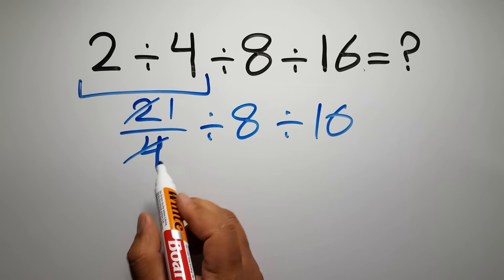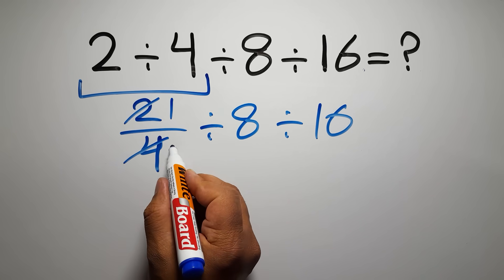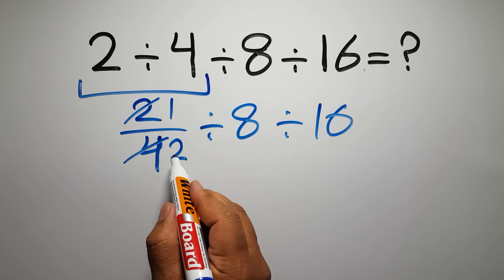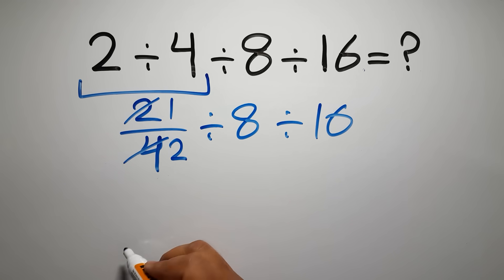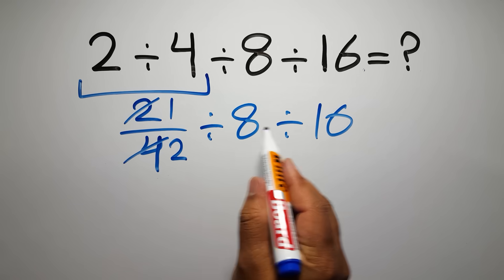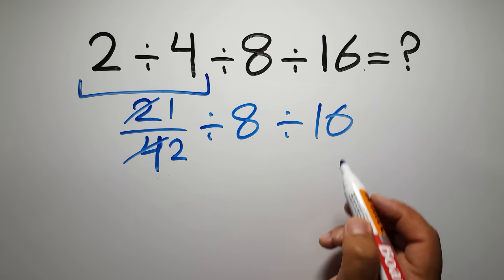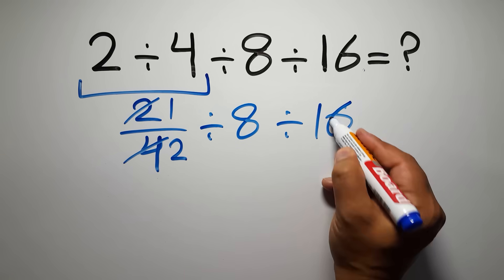2 divided by 2 gives us 1, and 4 divided by 2 gives us 2, so we have 1 over 2, divided by 8, divided by 16.